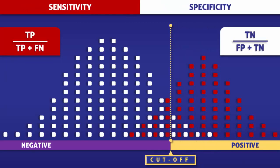In conclusion, when a cutoff level for a positive test is shifted in a direction that increases the detection of a disease, the sensitivity will increase but the specificity will decrease. And conversely, when the cutoff level for a positive test is shifted in a direction that increases exclusion of a disease, the specificity will increase but the sensitivity will decrease.